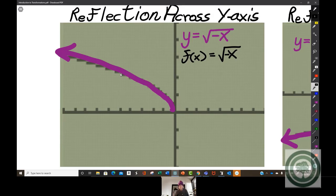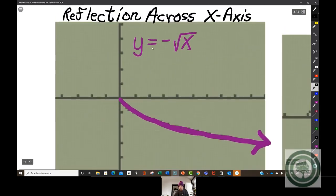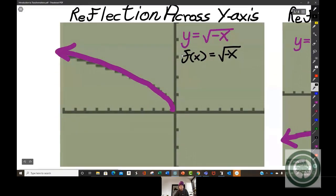It's the mirror image across the y-axis. So this is called a reflection across the y-axis. You've got a reflection across the x-axis if you put a negative sign in front of the square root of x. You've got a reflection across the y-axis if you put a negative sign on the inside of the square root in front of the x.